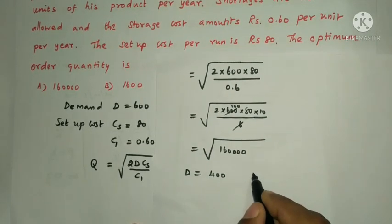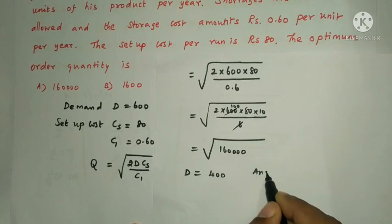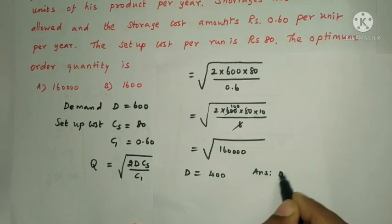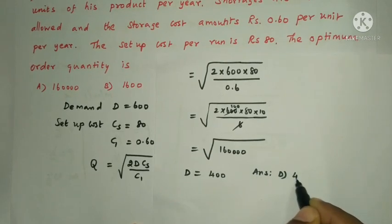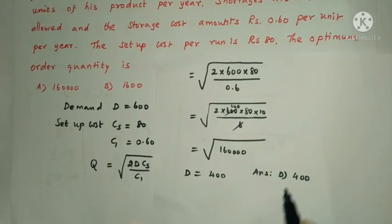Therefore, the optimum order quantity is 400 units. The answer is option D.